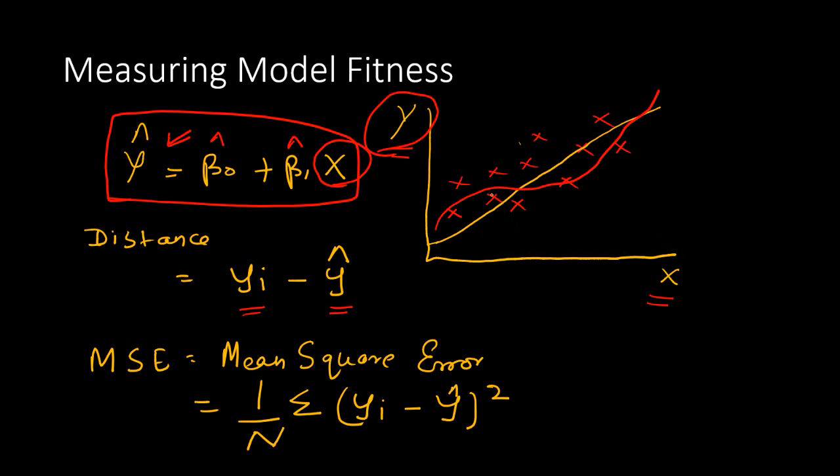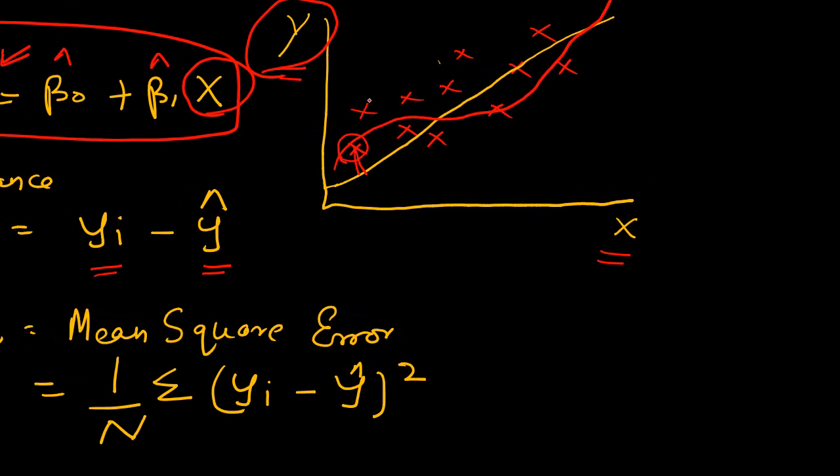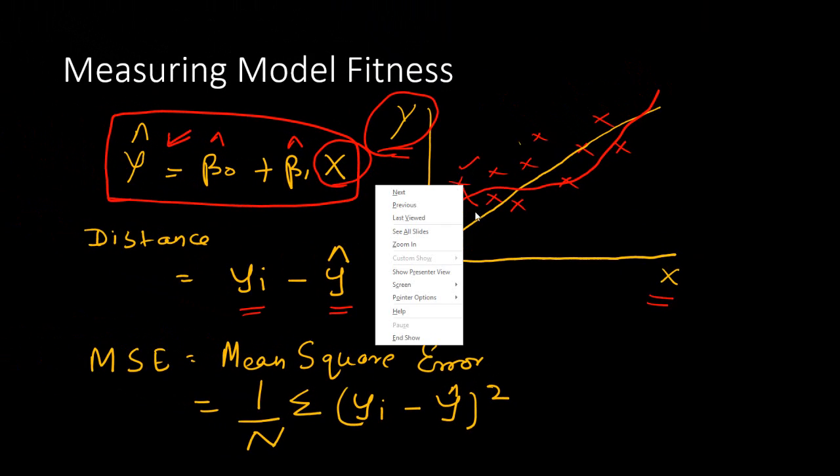Let me show it in the diagram. For example, this is the Y1, first Y value. The distance from the regression line is this one. Similarly, for this particular data point, the distance is this one. Simply draw a perpendicular line from the data point to the regression line or to the regression curve and you will get to know what is the distance of each data point from the line.